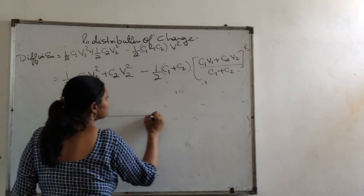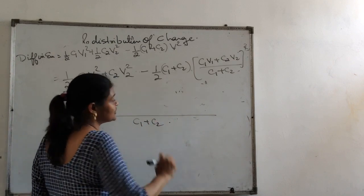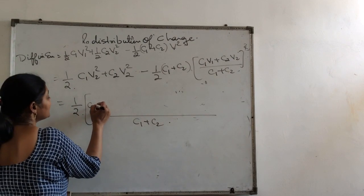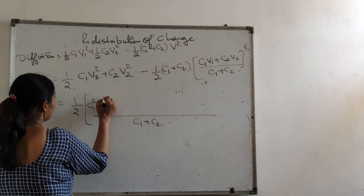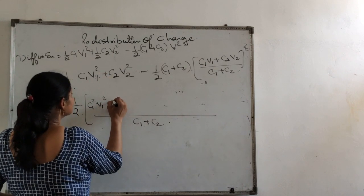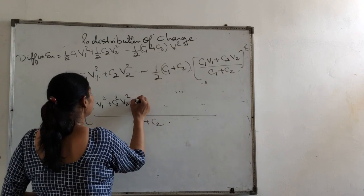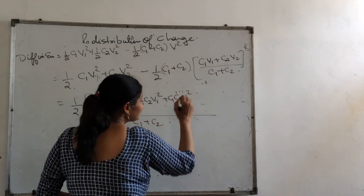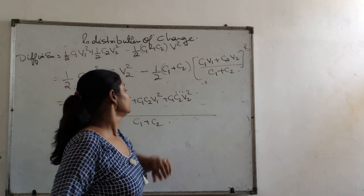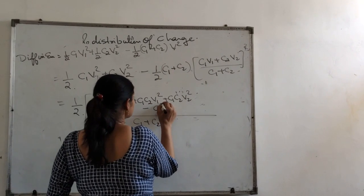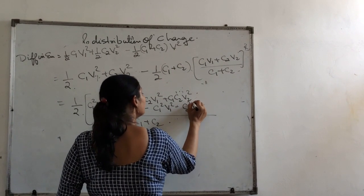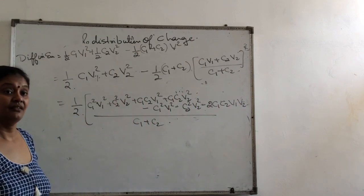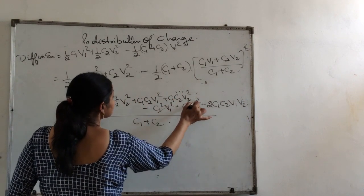Taking half common and C1 plus C2 as LCM, you will have C1 square V1 square plus C2 square V2 square plus C1 C2 V1 square plus C1 C2 V2 square. From this minus C1 square V1 square plus C2 square V2 square. When you cancel these terms, you are left with half, and C1 C2 is common.